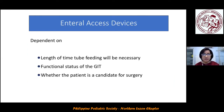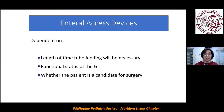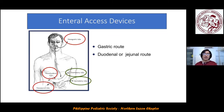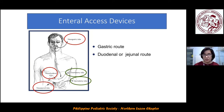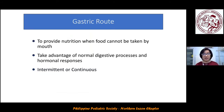How are we going to give these food items? We have enteral access devices, which are dependent on the length of time tube feeding will be necessary, the functional status of the gastrointestinal tract, and whether the patient is a candidate for surgery. Options include the gastric route — nasogastric or gastrostomy tube — or the duodenal/jejunal route — nasoduodenal or nasojejunal tube.